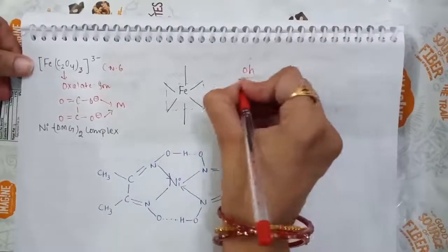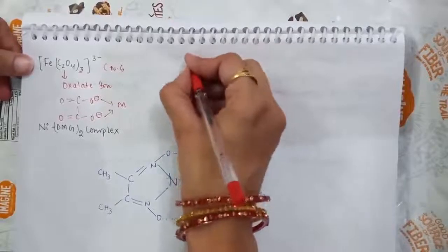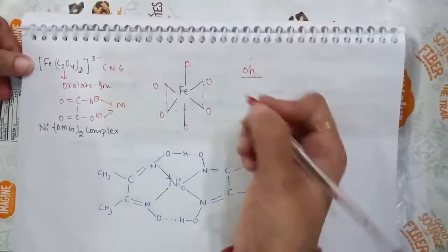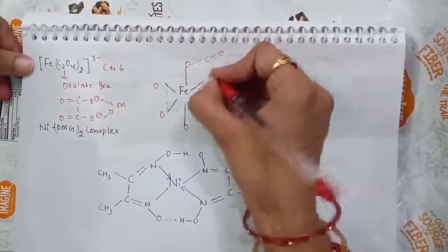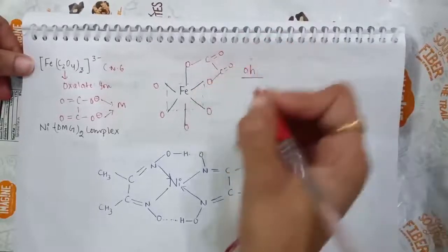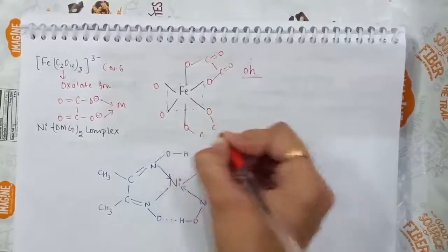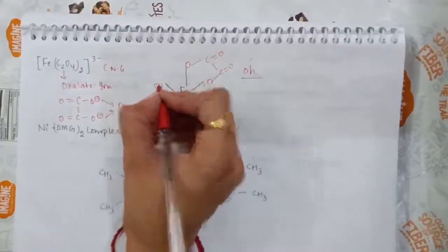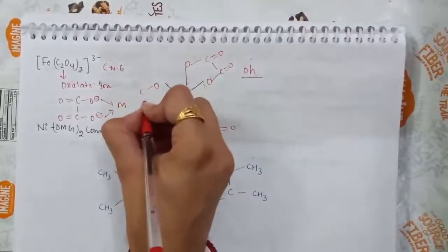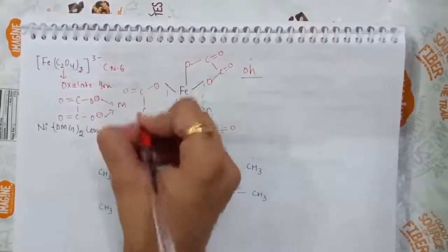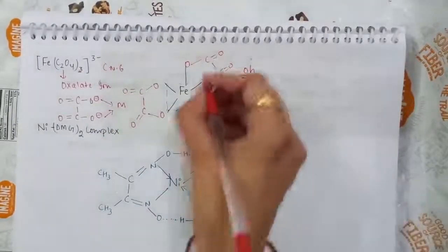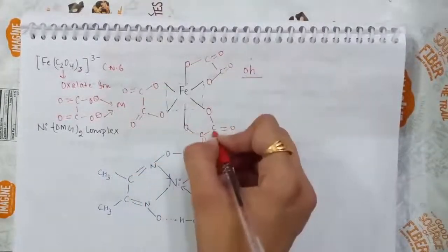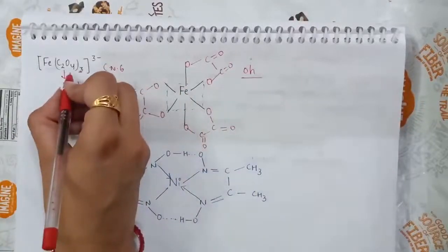This forms an octahedral complex with oxygen as the binding atom. Each C2O4 unit includes carbon with double-bonded oxygen atoms, resulting in an octahedral chelate complex. This ring structure is due to the presence of the polydentate ligand, confirming the stability of the complex.